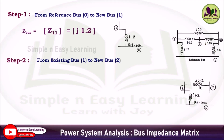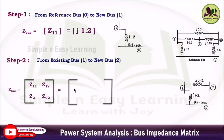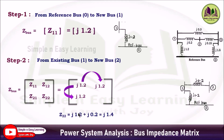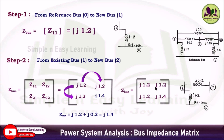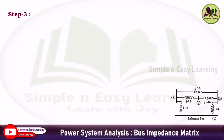Step 2: from existing bus 1 to new bus 2, considering reactance j0.2. Z-bus is of order 2×2 and consists of four terms: Z11, Z12, Z21, and Z22. Z11 is substituted directly from step 1 as j1.2. Z12 and Z21 are obtained by copying Z11, so both equal j1.2. Z22 equals Z11 plus j0.2, which is j1.2 plus j0.2, giving j1.4. So the Z-bus matrix at step 2 is [[j1.2, j1.2], [j1.2, j1.4]].